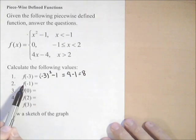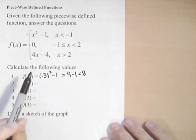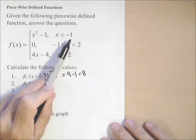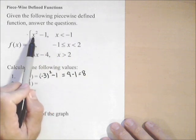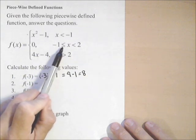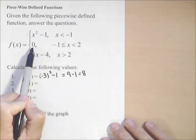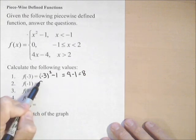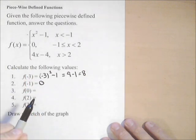Now, let's see what happens at f of negative one. Notice it's x squared minus one for x strictly less than negative one, so it doesn't include negative one, so we do not want to use this piece. Right here, when x is greater than or equal to negative one, the function is zero. So f of negative one is just zero because we're using that middle piece.